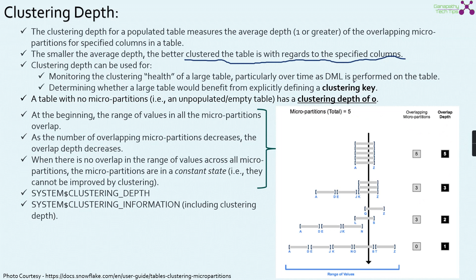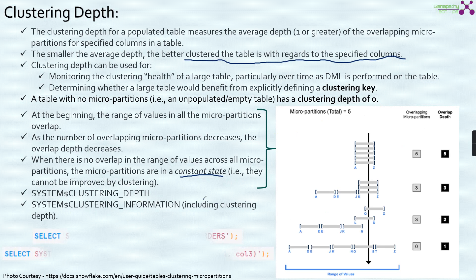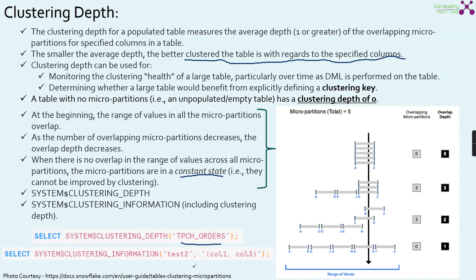Monitoring the clustering health of a large table — particularly for DML operations performed on a table — helps determine whether a large table would benefit from explicitly defining a clustering key. A table with no micro partitions has a clustering depth of zero. As overlapping micro partitions decrease, the overlap depth decreases. When there is no overlap in range of values across micro partitions, the micro partitions are in a constant state, meaning clustering cannot be improved further. This information can be fetched from two important system functions: system$clustering_depth and system$clustering_information, using SELECT statements like SELECT SYSTEM$CLUSTERING_DEPTH('tablename') or SELECT SYSTEM$CLUSTERING_INFORMATION('tablename', '(col1, col3)').